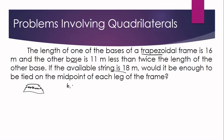One base is given as 16 meters. The other base is 11 meters less than twice 16, so: 2 times 16 equals 32, and 32 minus 11 equals 21. So B sub 1 is 16 meters and B sub 2 is 21 meters. From here we can calculate the midsegment.